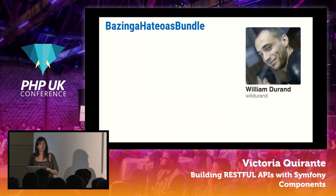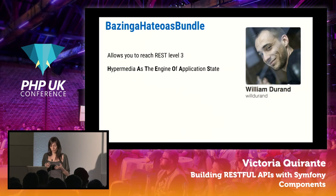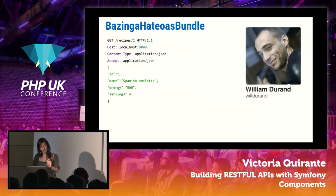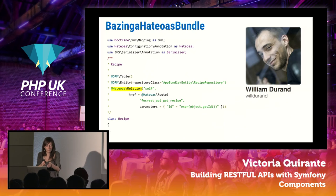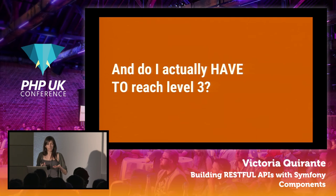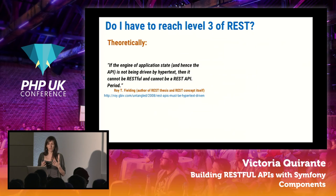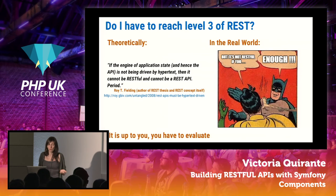The next bundle allows us to reach REST level three — returning links that make it possible to discover your API. Instead of returning a plain identifier, you return a proper link, generated via an annotation that takes care of generating the correct route so you don't have to hard-code your routes. Theoretically, if you don't implement this, your API is not truly RESTful. In the real world, not so many APIs implement it, so again it depends on what you need and what you think is best for your API consumers.